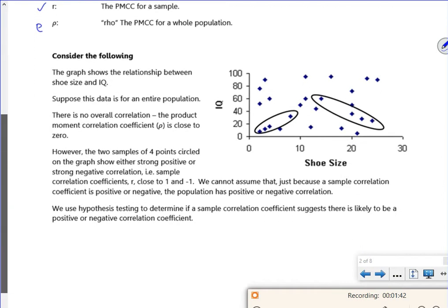So this is quite a nice visual really. The whole population here has got no correlation whatsoever. But I might take a random sample and if you look, this one here has got really strong, good positive correlation. So I've got positive correlation here but the population has got no correlation. And this one's got really good negative correlation.